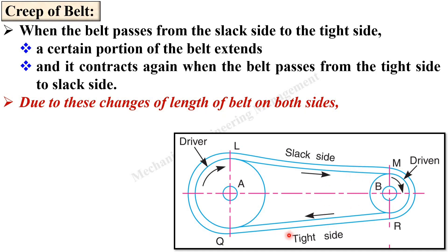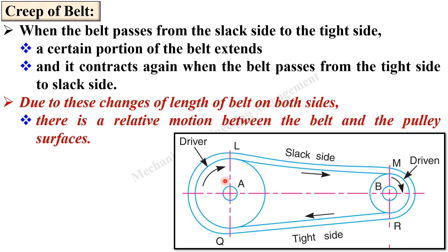Due to these changes of the length of the belt from here to here and from here to here, we can see in short on both sides there is a relative motion between the belt and the pulley. This relative motion is termed as creep. So very simply, creep means there is a relative motion between the belt and the pulley due to the changes of the length of belt on both sides and that is especially due to the tight side and slack side.